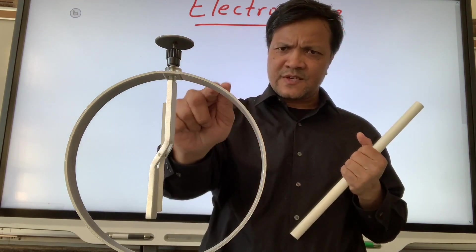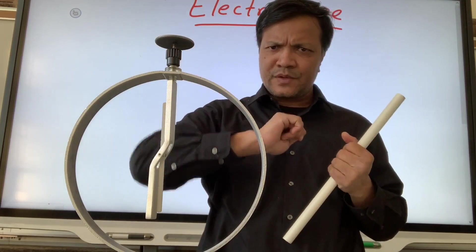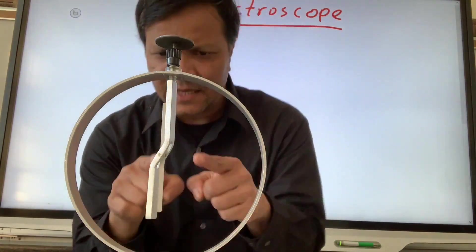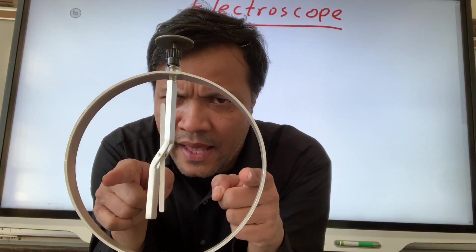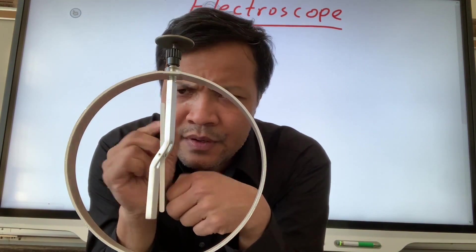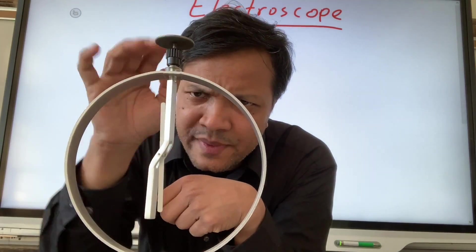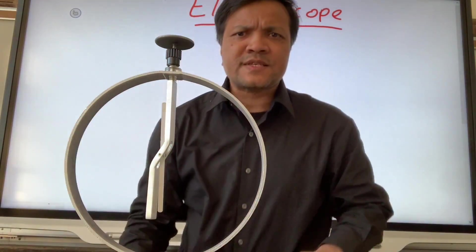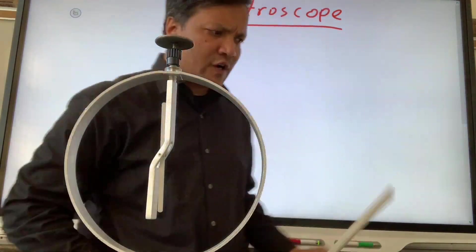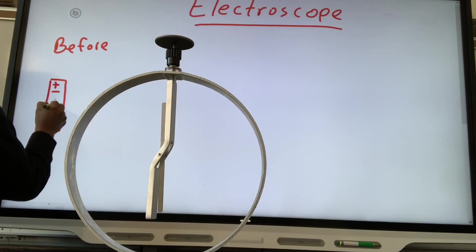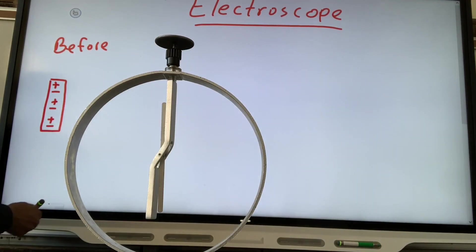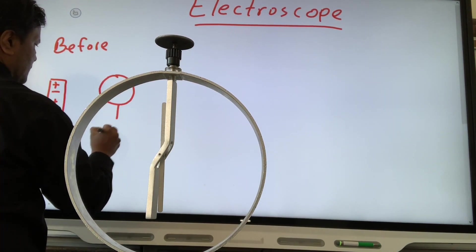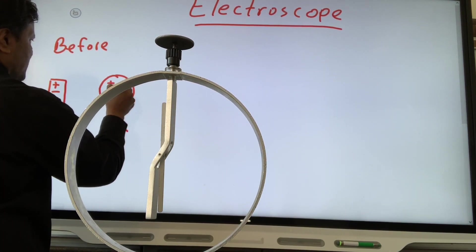Of course, we're not going to see it — that's why we have this electroscope. If we bring this to the electroscope, the leaf will repel. Currently this electroscope is neutrally charged, and so is the PVC pipe. This is neutrally charged, and this is the electroscope, which is also neutrally charged.